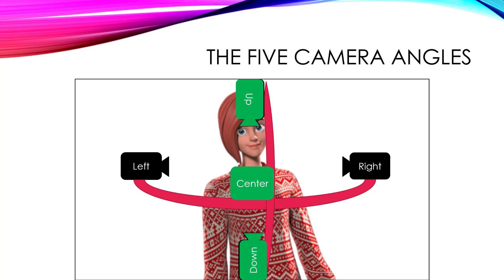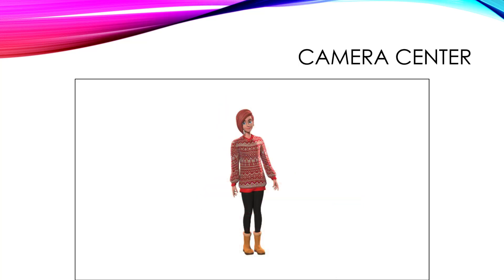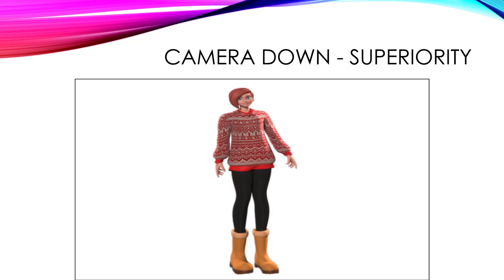Let me show you what I'm talking about. Here we have a camera center view of the 3D character Emma, and you can see everything is in proportion — it's a straight-on view. This is a neutral camera view; it doesn't really suggest anything as far as emotion. Here's a camera down superiority look. You can see that the top of Emma has gotten smaller and the bottom has gotten larger. This is what happens when you move the camera down, and when you're looking up at a character, that conveys superiority.